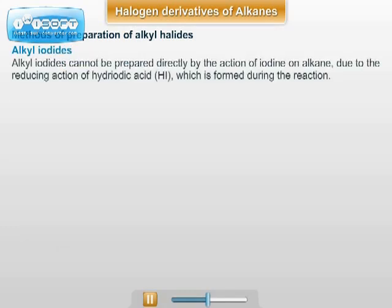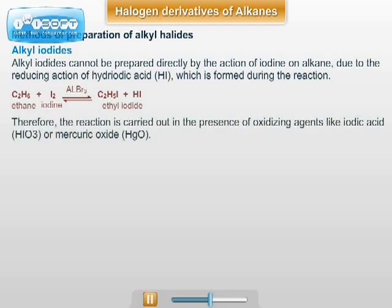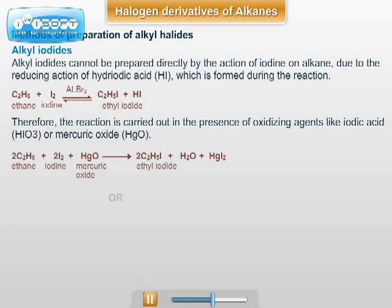Alkyl iodides cannot be prepared directly by the action of iodine on alkanes due to the reducing action of HI. Therefore, the reaction is carried out in the presence of oxidizing agents like iodic acid or mercuric oxide. For example, ethane reacts with iodine in the presence of mercuric oxide, and ethyl iodide is formed.